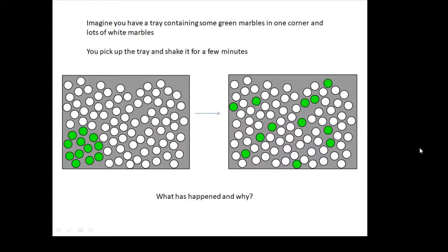Imagine you have a tray with lots of marbles in it, and some of the marbles are green and they're all in the corner, and then all the other marbles are white. But what you do is you pick up the tray and you shake it for a few minutes. What's going to happen? Well, there's going to be a lot of mixing going on, a lot of random motion, and you'll end up with the green marbles all mixed in with the white marbles.